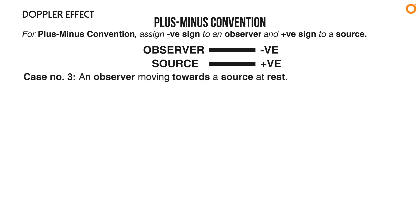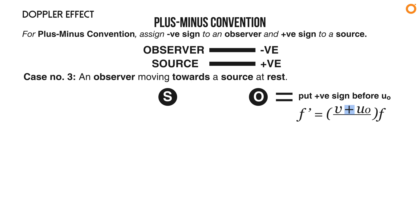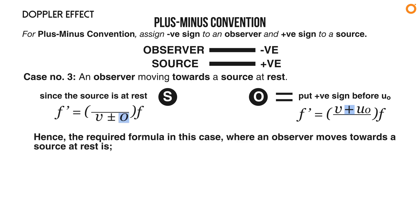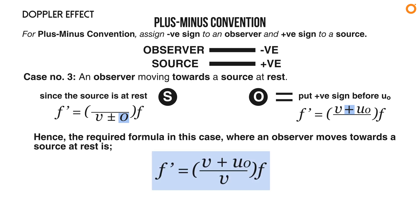Case number three: an observer moving towards a source at rest. The observer (considered negative) moves towards the source (considered positive), so put a positive sign before u₀. Since the source is at rest, uₛ becomes zero. The required formula is: f prime equals to (v plus u₀) divided by v times f.